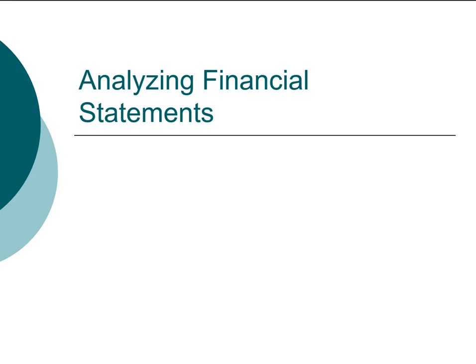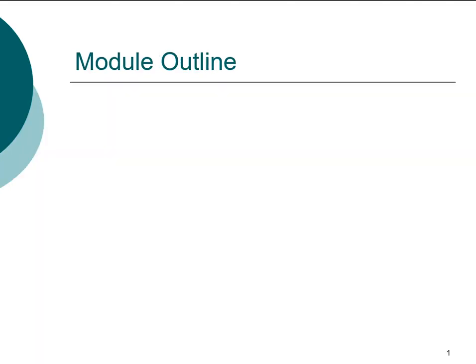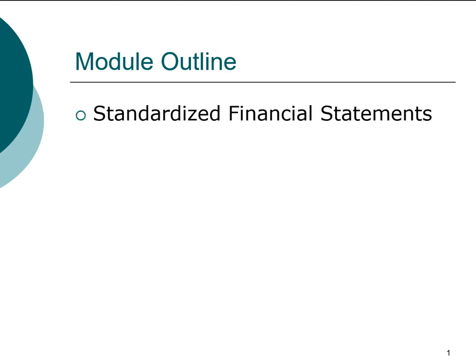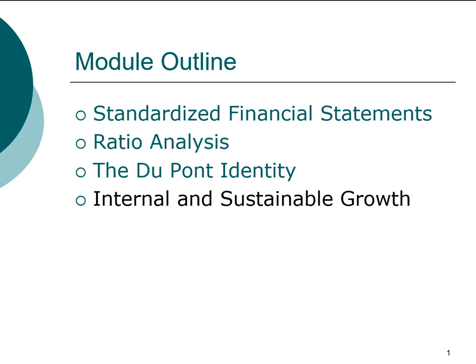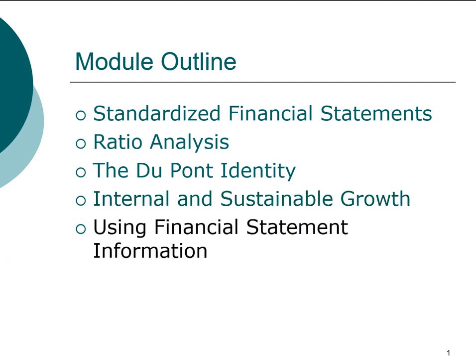Welcome to this new module on analyzing financial statements. This is one of the most important modules in finance. If you think of finance as having three main branches: one is the time value of money, another is analyzing the relationship between risk and return, and the third is analyzing financial information. In this module we're going to cover how to compute standardized financial statements, how to perform financial ratio analysis, and more advanced topics such as the DuPont identity and computing the internal and sustainable growth rates.